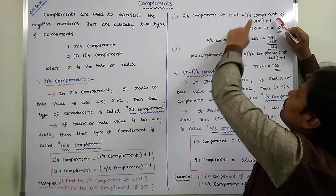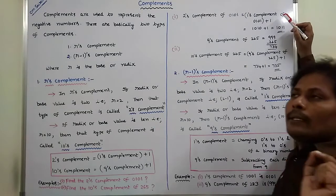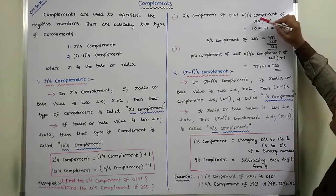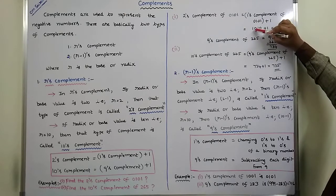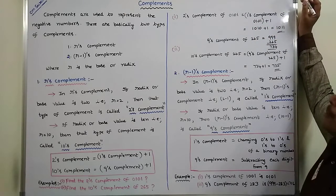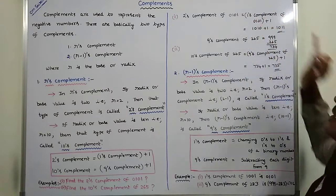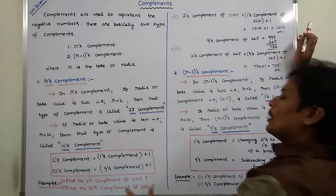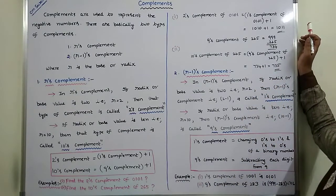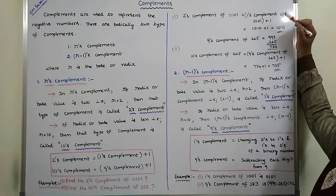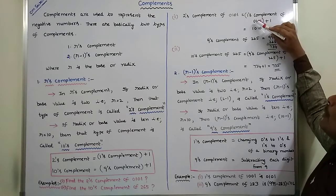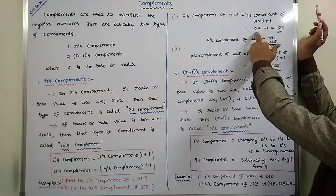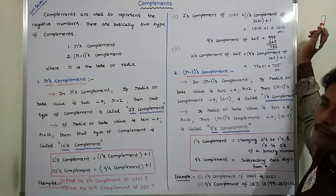How do we get the 1's Complement? 1's Complement of a given number is obtained by changing 0's to 1's and 1's to 0's. So here: 0 is inverted as 1, 1 is inverted as 0, 0 is inverted as 1, 1 is inverted as 0. So the 1's Complement of 0101 is 1010. Then 1010 plus 1 equals 1011. So 1011 is the 2's Complement of 0101.